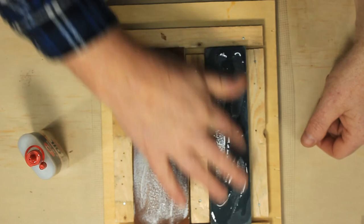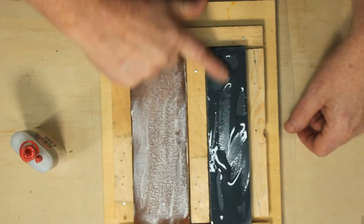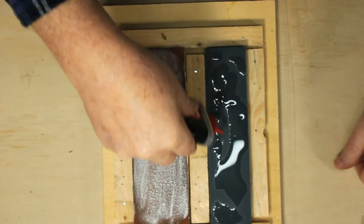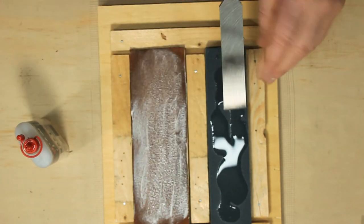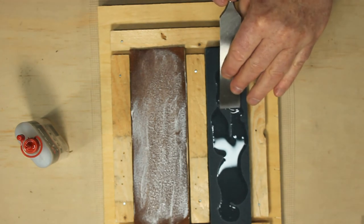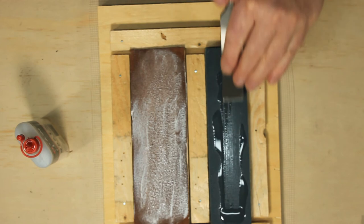The chisel already has an accurately ground 25 degree bevel. We're going to hone a 30 degree micro bevel onto the tip of that bevel. Do this by resting the chisel on its bevel, then lifting the handle very slightly. Then push the chisel straight forward, holding it at that angle.